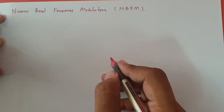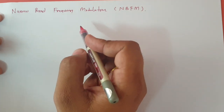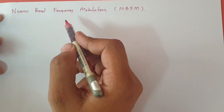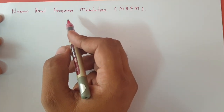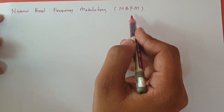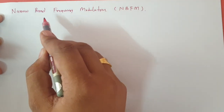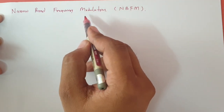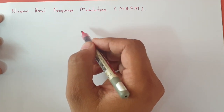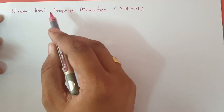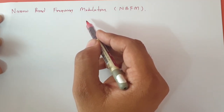Let us try to understand basic things regarding narrow band frequency modulation. It is a category of frequency modulation, and in this we aim to improve the spectrum efficiency of frequency modulation. The spectrum efficiency of narrow band frequency modulation is a bit better compared to wide band frequency modulation. The reason is that here we have a narrow bandwidth associated with frequency modulation. Usually, this narrow band frequency modulation is used in voice communication as well as in radio settings.